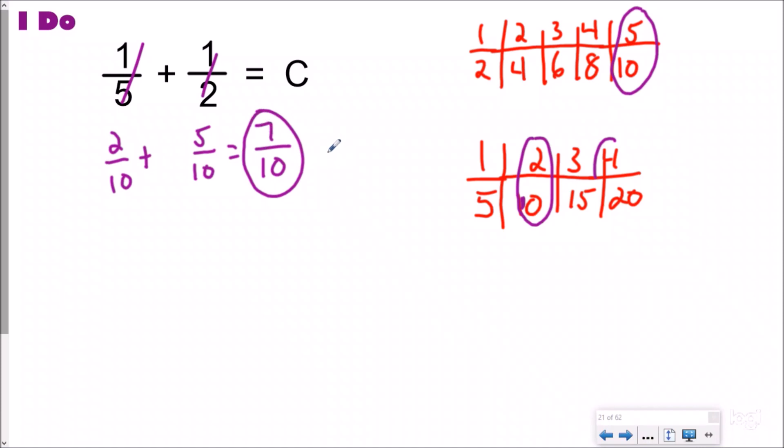which you could also maybe write as a decimal just for fun. Sum of one-fifth plus one-half is seven tenths.